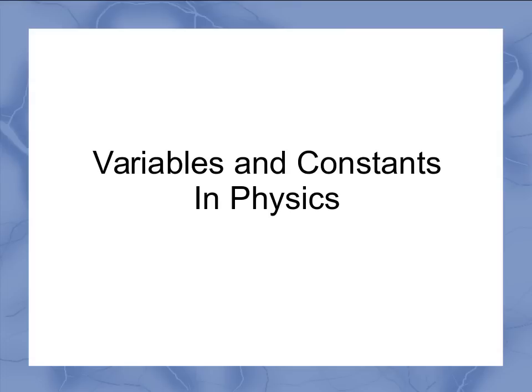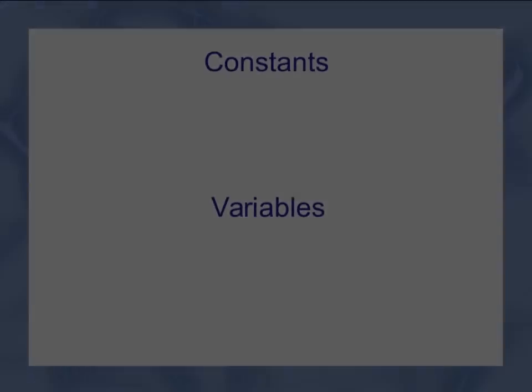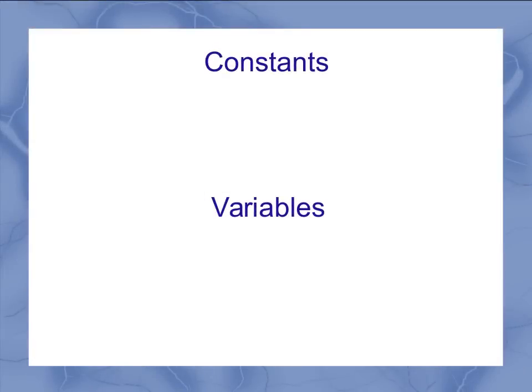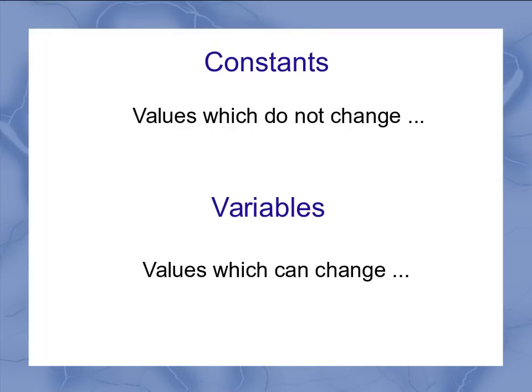Now we're going to look at variables and constants in physics. You think about those two words, they mean what you expect them to mean. Constants are values which don't change. Variables are values which can change. They can vary.